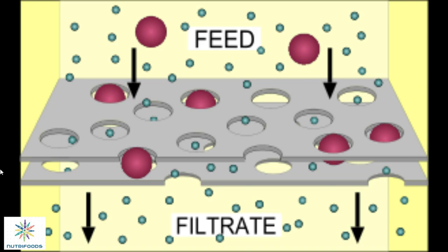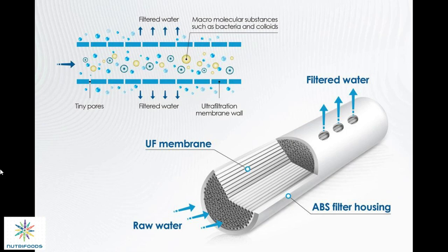The process of ultrafiltration works by applying pressure to the feed solution, which forces the liquid through the membrane while retaining particles and molecules larger than the pore size of the membrane. The membrane typically has a pore size range of 0.001 to 0.1 micron, allowing for the separation of macromolecules such as proteins.